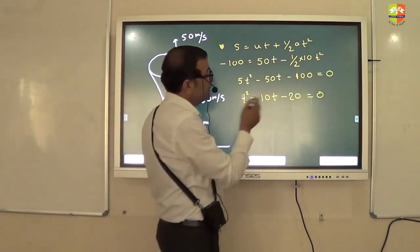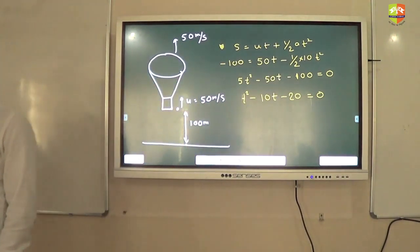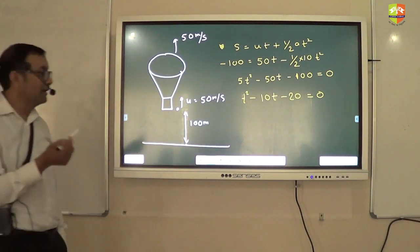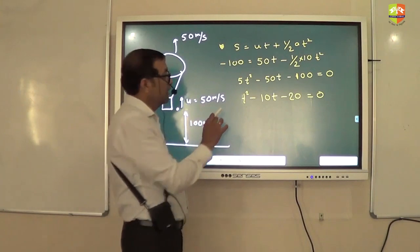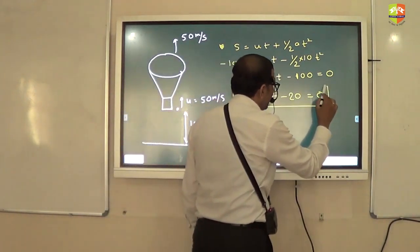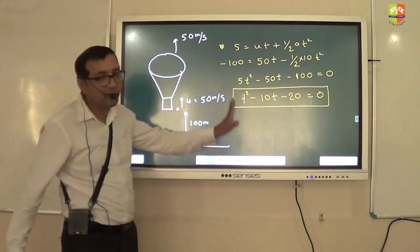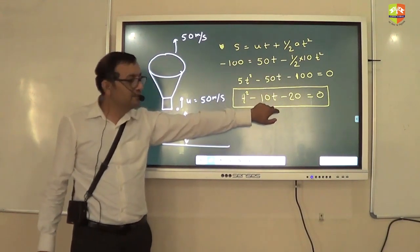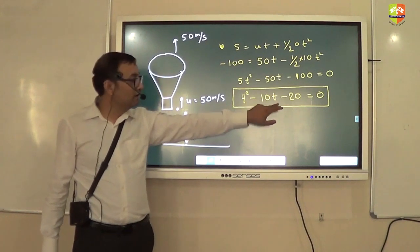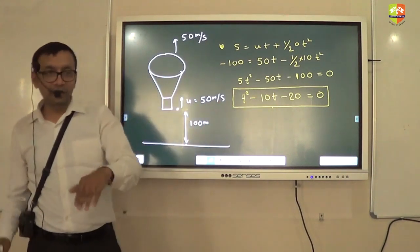So 20 is 5 into 4 which is 5. Yeah, we can't factorize it. Okay, but the formula we haven't learnt yet, right? Quadratic equation formula. So let's keep it here only. You don't need to solve it. But have you understood how to apply the concept and get this equation? Solution of this equation is the answer. How to solve quadratic equation you will learn in mathematics.